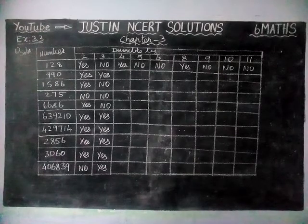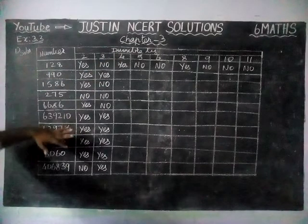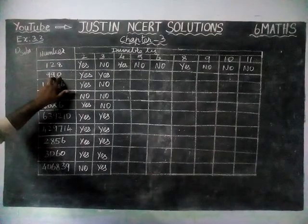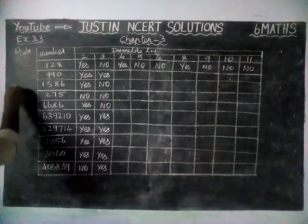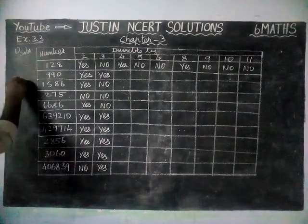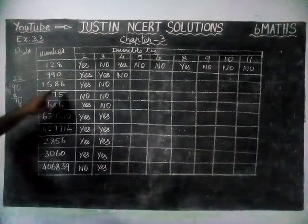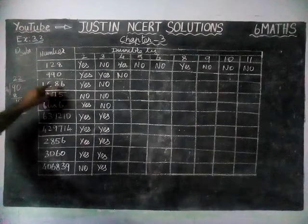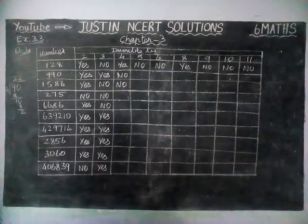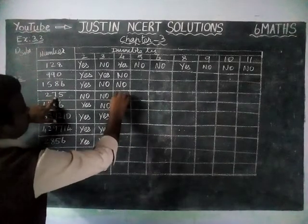Now we are going to find the next — divisibility by 4. If the last 2 digits are divisible by 4, that entire number is divisible by 4. Now we are going to check it. Last 2 digits: 90. When dividing 90 by 4 — 2 fours are 8, remaining 1; 10 — 2 fours are 8, remaining 2 — so 90 is not divisible by 4. Next, last 2 digits: 86 — 2 fours are 8, only 1 four fits, remaining 2 — so 86 is also not divisible by 4. And next, 75 is exactly not divisible by 4, so no.